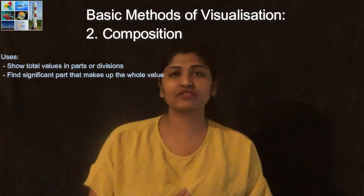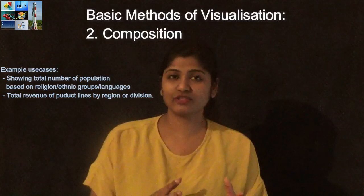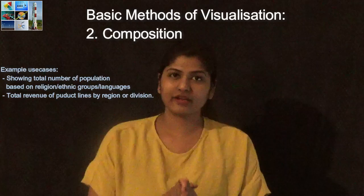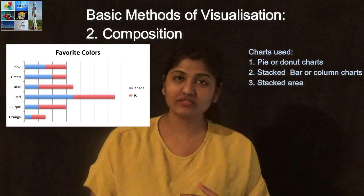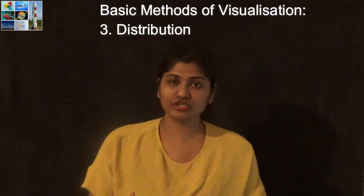Next is composition. As the name suggests, if you want to show total values in the form of parts or divisions, you use this type. It helps you find the significant parts that make up the whole value. Common use cases include showing total population based on religion, ethnic groups, or languages, or total revenue made by product lines based on region or division. For this, you can use pie or donut charts, stacked bar or column charts, or stacked area charts.